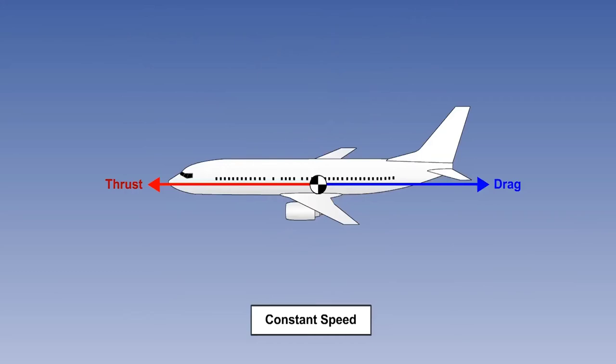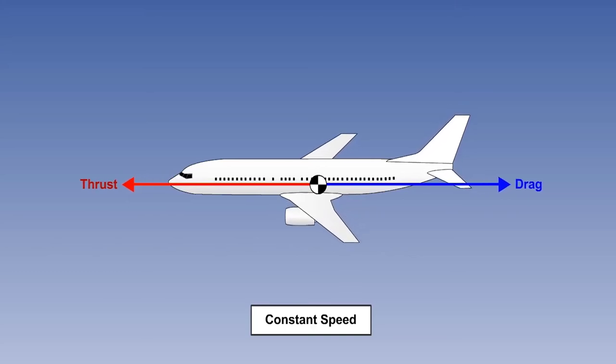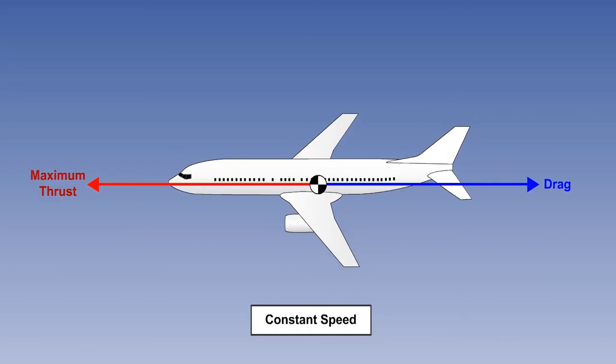The extra lift required during a turn will result in greater induced drag, so to maintain the straight flight speed, more thrust is required. As more bank is applied, more thrust is needed, and eventually maximum thrust will be reached.